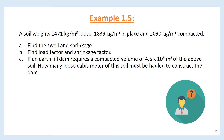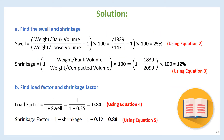Example 1.5: A soil weighs 1,471 kg/m³ loose, 1,839 kg/m³ in place, and 2,090 kg/m³ compacted. Part A: find the swell and shrinkage. Part B: find the load factor and shrinkage factor. Part C: if an earth-filled dam requires a compacted volume of 4.6 × 10⁶ m³ of the above soil, how many loose cubic meters of this soil must be hauled to construct the dam?